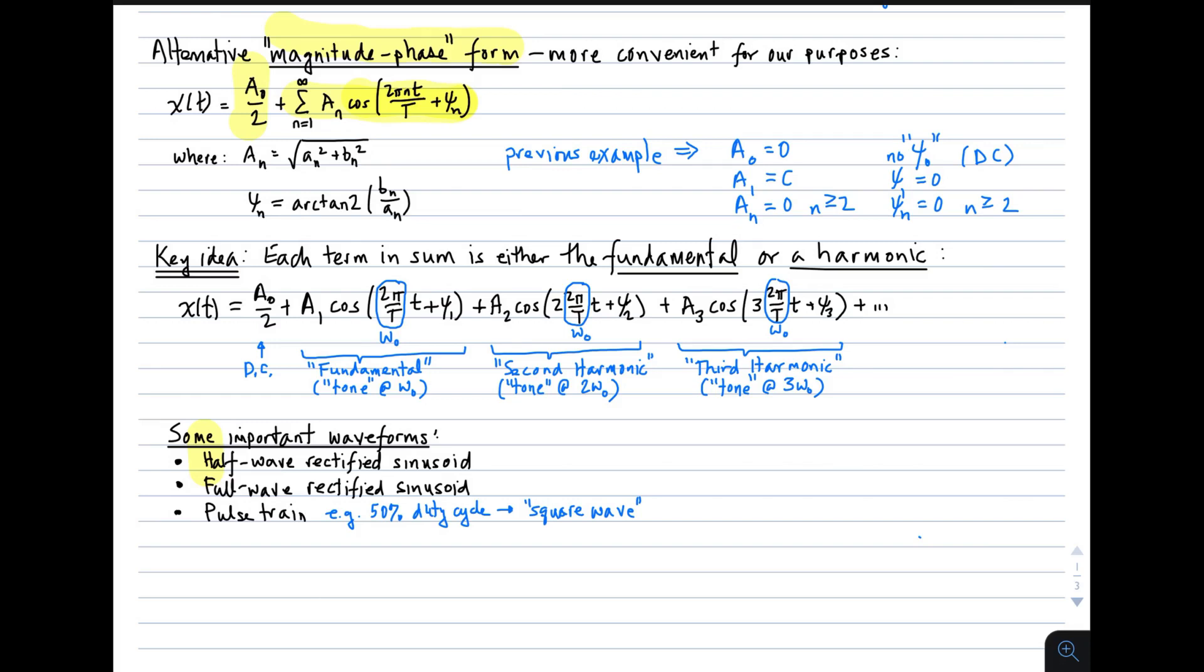In this formulation, if you care to calculate it, the big A_n's are given by the square root of a_n² plus b_n². And the phase for each one of these terms is given by the four-quadrant arctangent of b_n with respect to a_n.